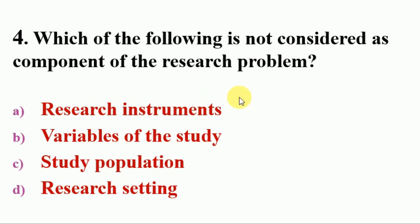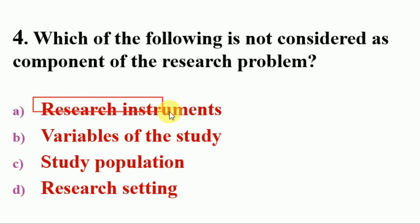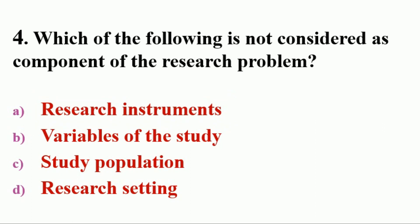Next question: which of the following is not considered a component of the research problem? Options: A. research instruments, B. variables of the study, C. study population, D. research setting. The answer is A, research instruments. The components of the research problem are research design, research variables, population, and research setting.